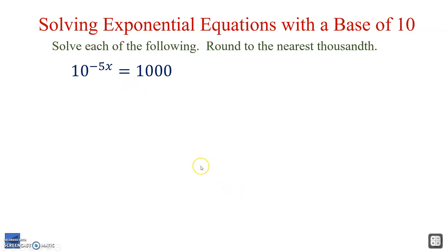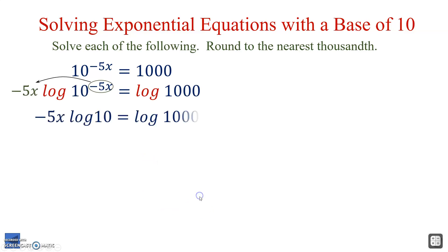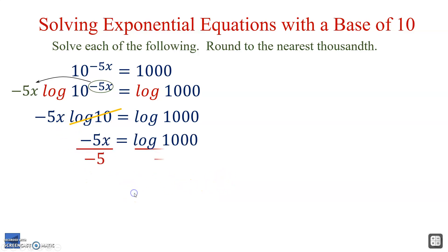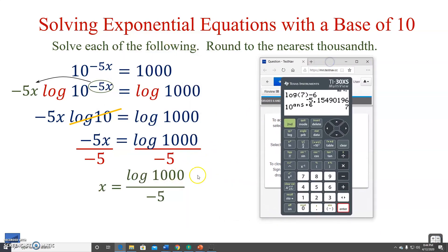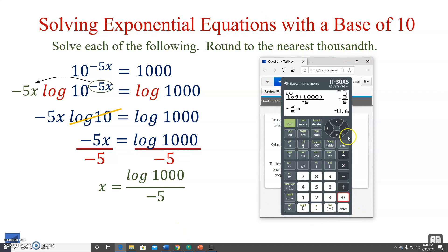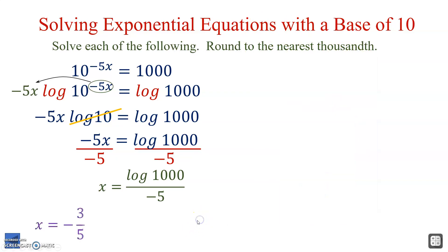Next: 10 to the negative 5x equals 1000. We log on both sides; the entire exponent negative 5x comes out in front, giving us negative 5x times log 10 equals log 1000. Log 10 cancels, leaving negative 5x equals log 1000. Dividing by negative 5 gives x equals log 1000 over negative 5. Log 1000 equals 3, so x equals 3 over negative 5, which is negative 3 fifths or negative 0.600.